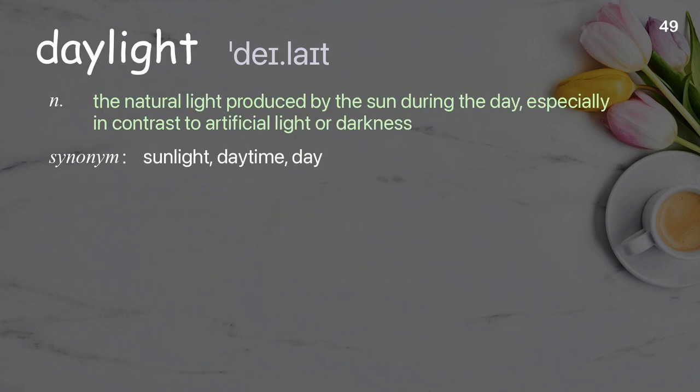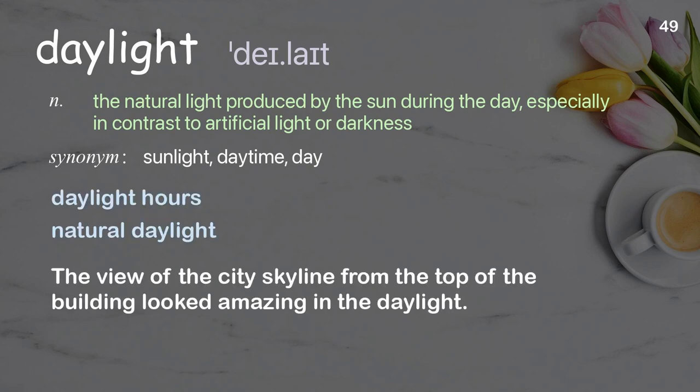Daylight: The natural light produced by the sun during the day, especially in contrast to artificial light or darkness. Examples: daylight hours, natural daylight. The view of the city skyline from the top of the building looked amazing in the daylight.